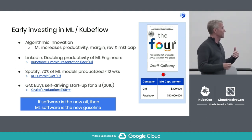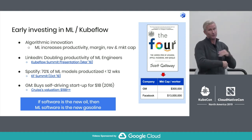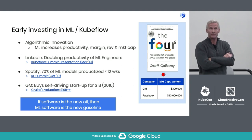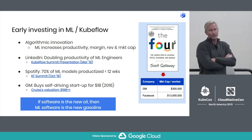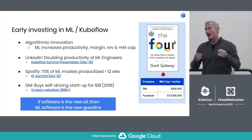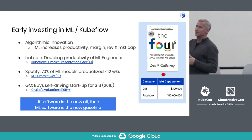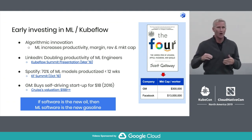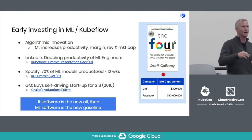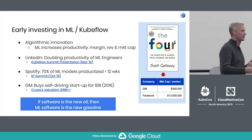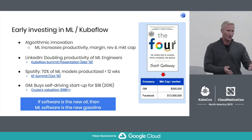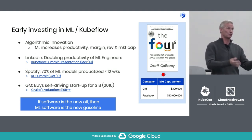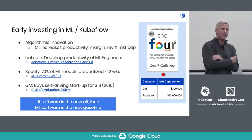A lot of you have probably seen Spotify's presentation. They did this at the Kubeflow 7 Summit. I thought it was very impressive that 70% of their models get productized within 12 weeks — the fact that they can do that, actually get them productized but also track it, I thought was impressive.